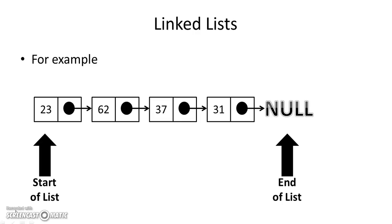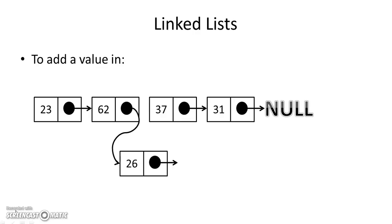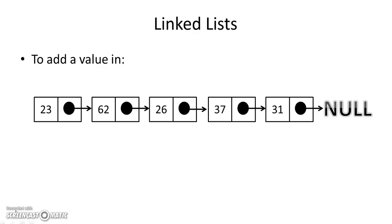A linked list normally terminates with a null value, which indicates there's nothing else in the list. The side without null is the start of the list; the side with null is the end. If we want to add a value at the third position, we create the node, make the second node point to the new node, and have the new node's pointer point to what was the third element.